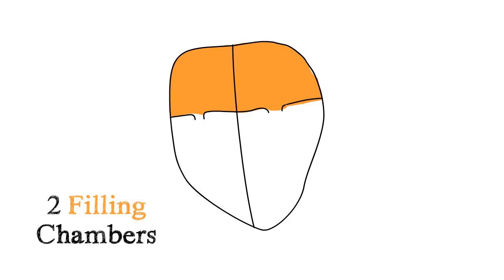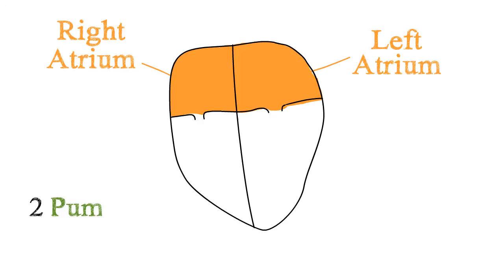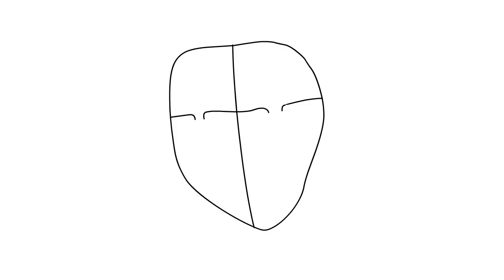The heart is made up of four chambers, two filling chambers known by the medical terms right and left atria, and two pumping chambers known as the right and left ventricles.